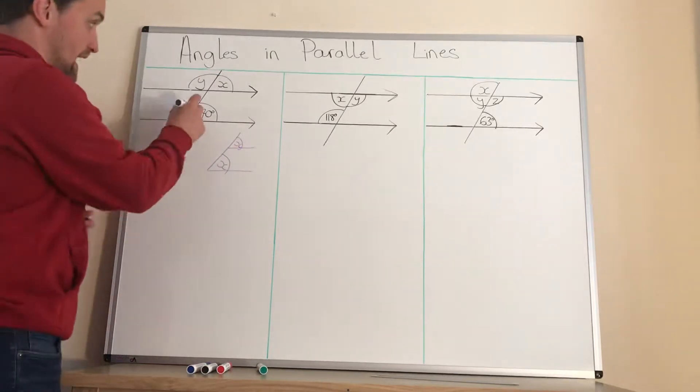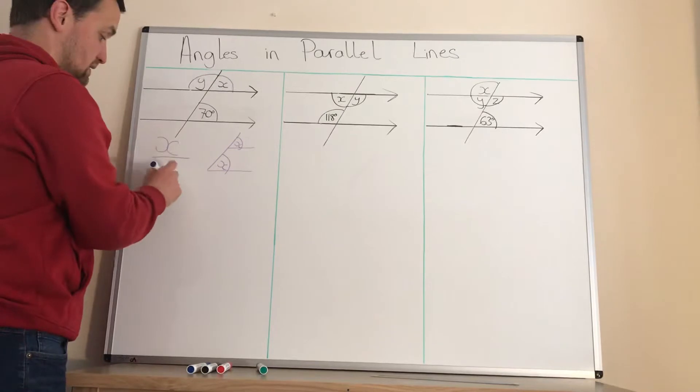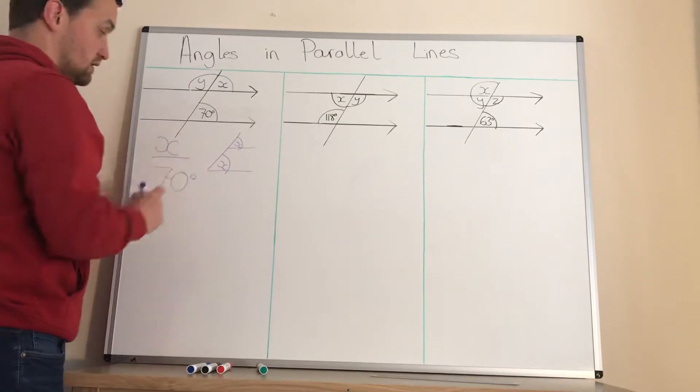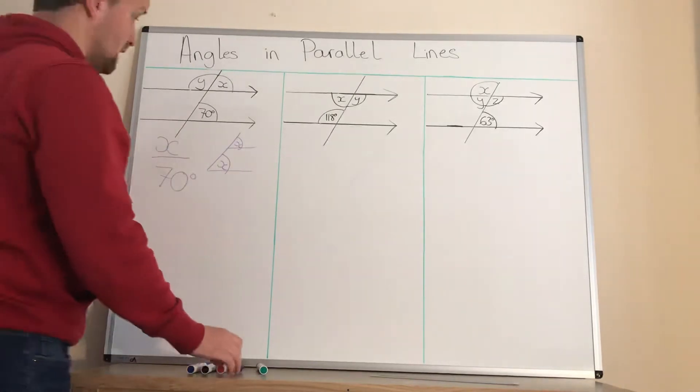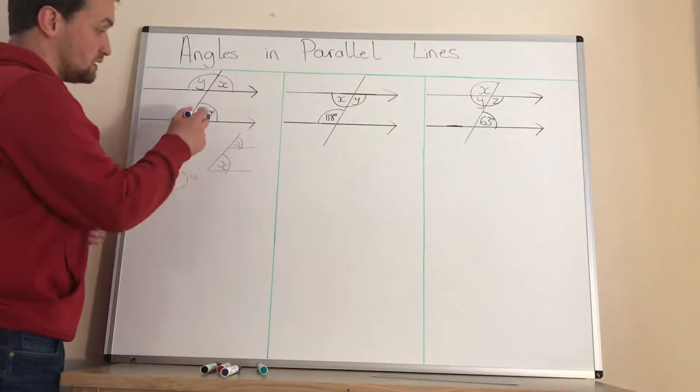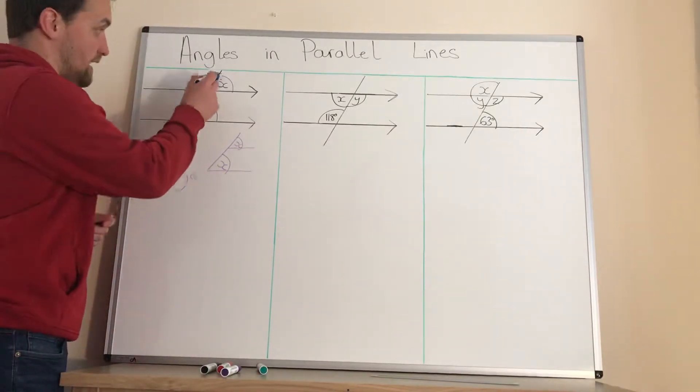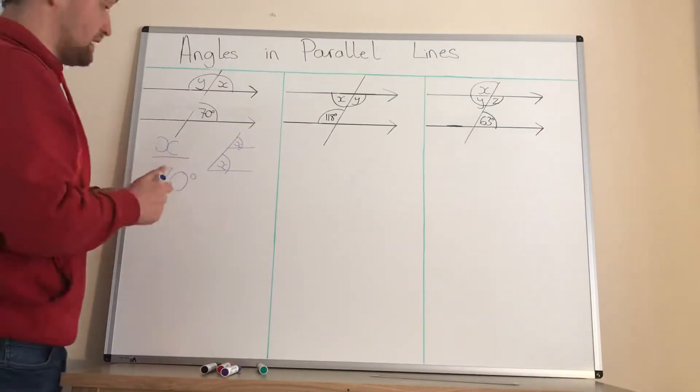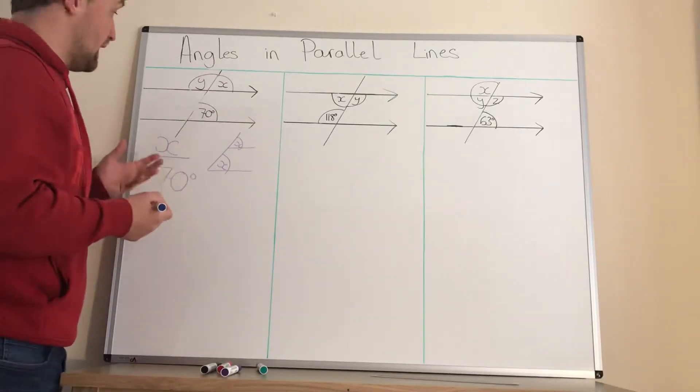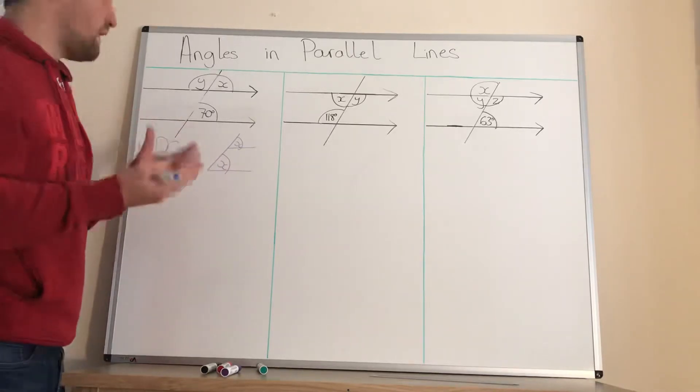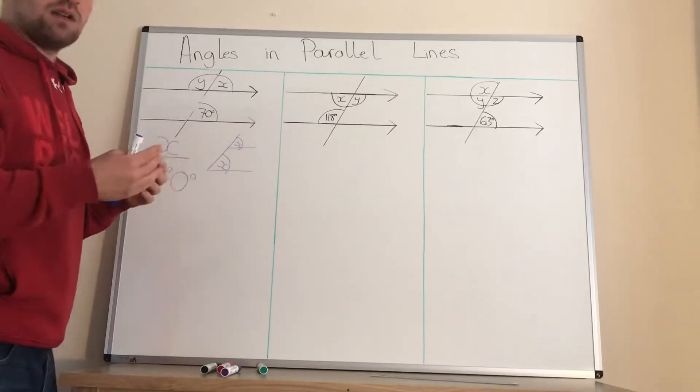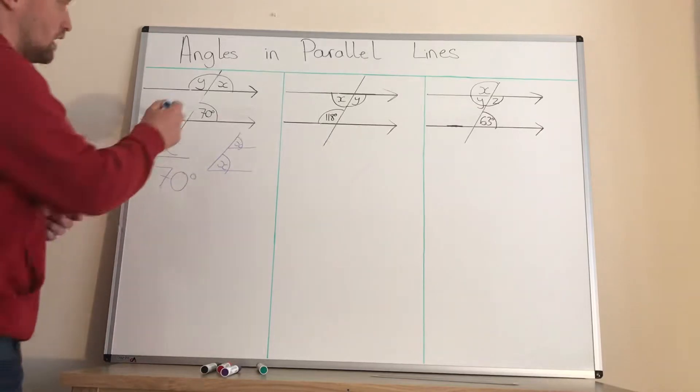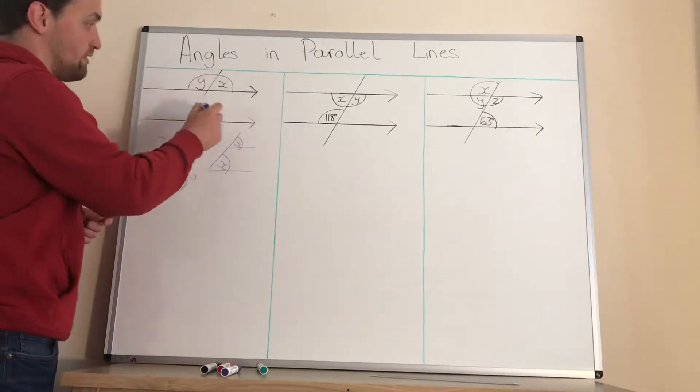So we've got two angles both are the same, so we know that X is 70 degrees. That's not too bad. You've got to be able to spot the F there. As I said to you last lesson, it may not be a nice F that we're used to seeing. It could be upside down, reflected, or rotated. That's what you need to spot. You've got an upside down F there.